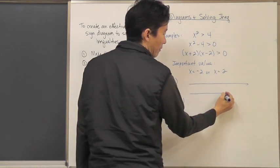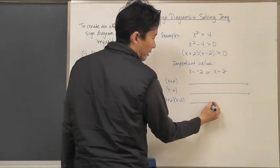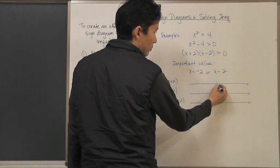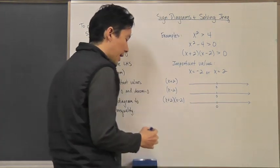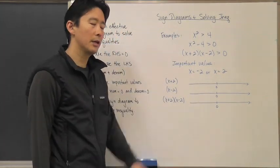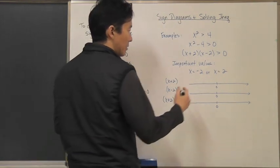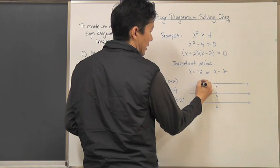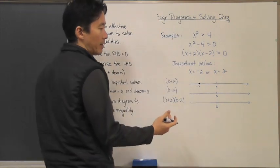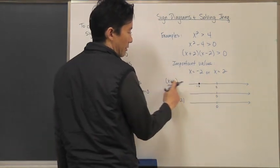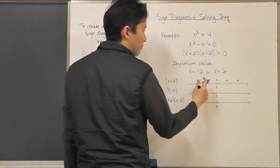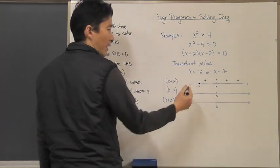I'm going to use a number line for each factor and for the product, and line them up so they're all coordinated and aligned. Now if I take a look at x plus 2, where is it equal to zero? It's equal to zero when x equals negative 2, so here's negative 2 — it is zero there. For any other value, say x equals 0: zero plus 2 is 2, which is a positive value. So everything to the right of negative 2 gives a positive value.